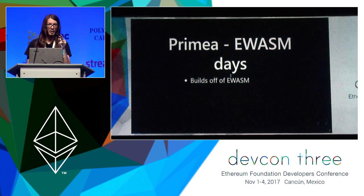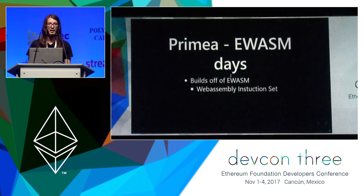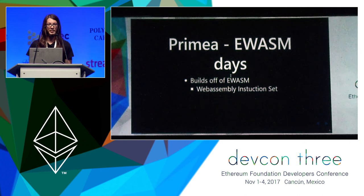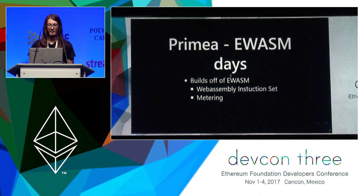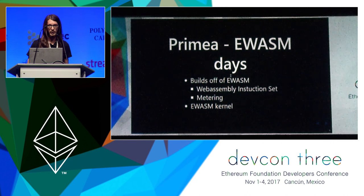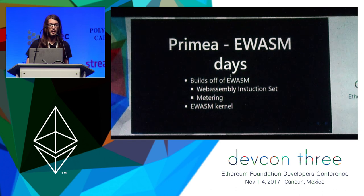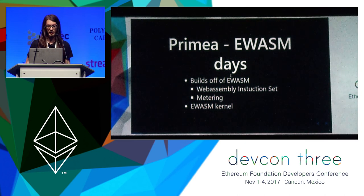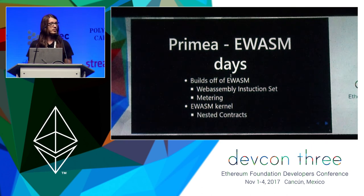If you're familiar with EWASM, the idea was to adopt the WebAssembly instruction set for usage in the Ethereum blockchain. Another important part of this was to add metering to WebAssembly. To run this modified WebAssembly binary, we created something called EWASM kernel, which just provided the methods to link the Ethereum blockchain to the WebAssembly binary. Shortly after that, I used the EWASM kernel to prototype something called nested contracts, which I'll talk about in a bit.